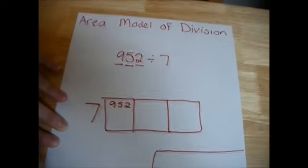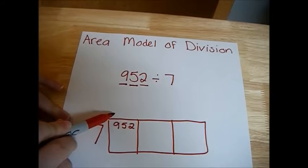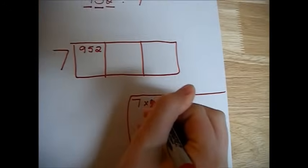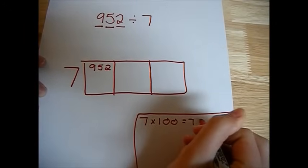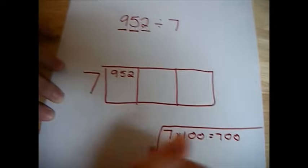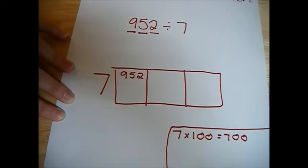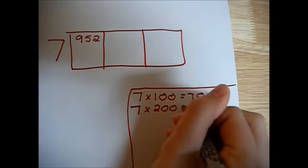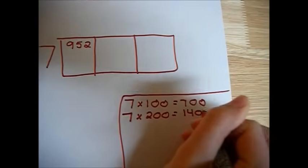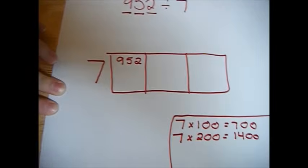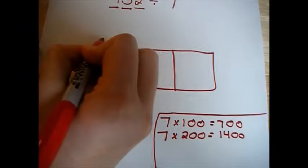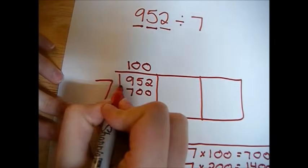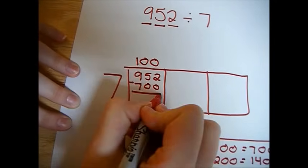Now we start with the highest place, which in this case is hundreds. So we start with multiplying 7 times 100, finding that equals 700. Now 700 is less than 952, but maybe we can go larger. Let's check. 7 times 200 would equal 1,400. That's definitely larger than 952, so we'll take 7 times 100. We place the 100 above the first column box and put the 700 that it equals inside.